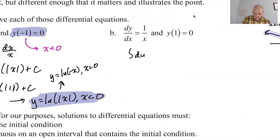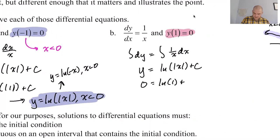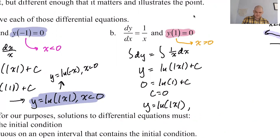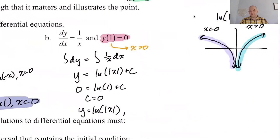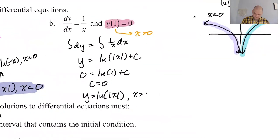For the second case, we integrate dy = (1/x)dx and get the same general solution. At this point, our initial condition has x equal to positive 1, so x is greater than zero. We solve and get 0 = ln(1) + C, so C equals zero. We say y = ln|x|, and since x is greater than zero from the initial condition, we stipulate x > 0. We get the right-hand branch. That is the answer.